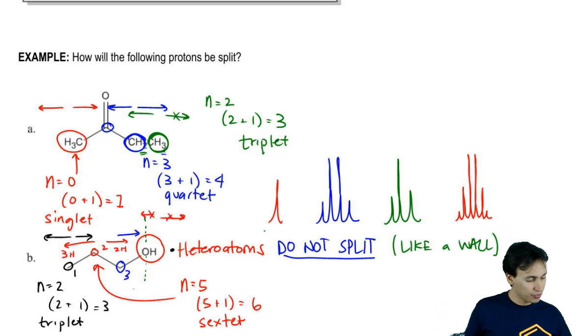Then finally, we've got proton type 3. I'll draw another arrow. For proton type 3, to the right I've got nothing—we just said that's a wall. To the left, I have two hydrogens, so that means N is going to be equal to 2, which means 2 plus 1 equals 3, which means it's going to be a triplet.